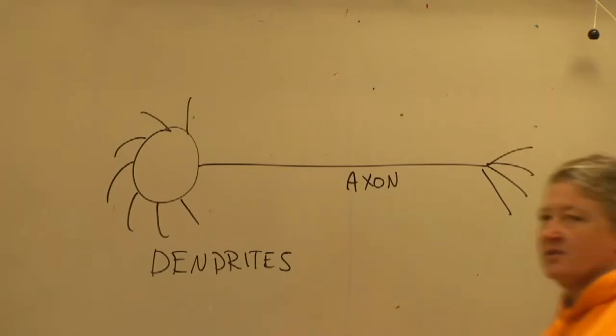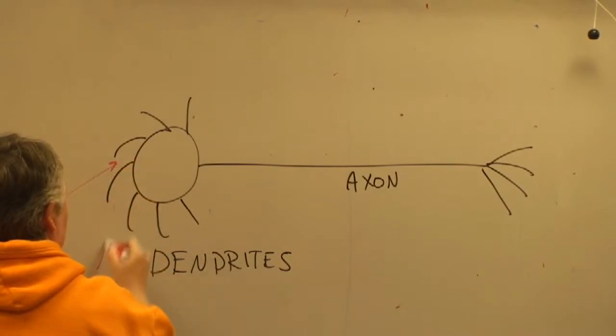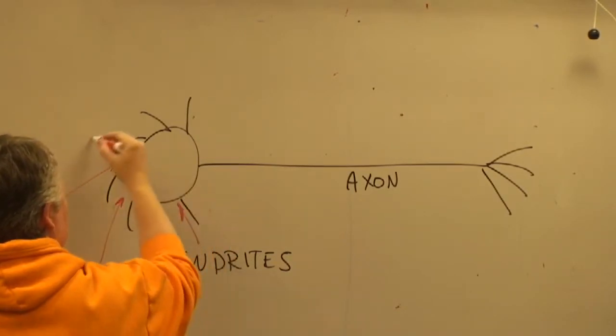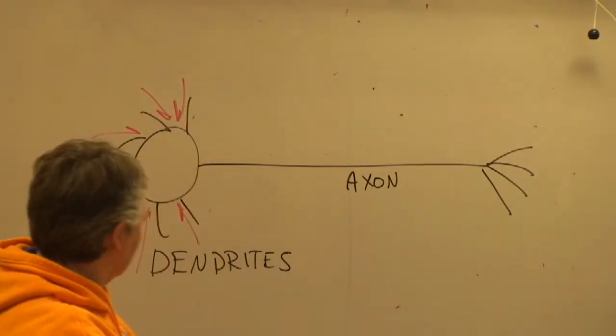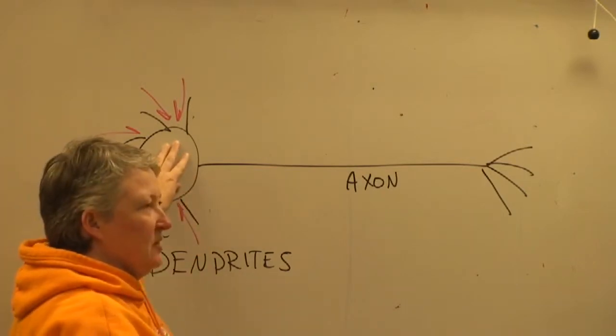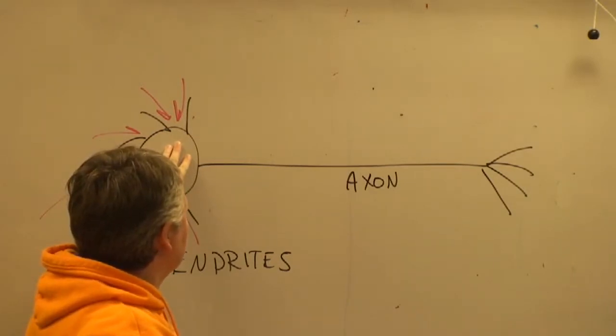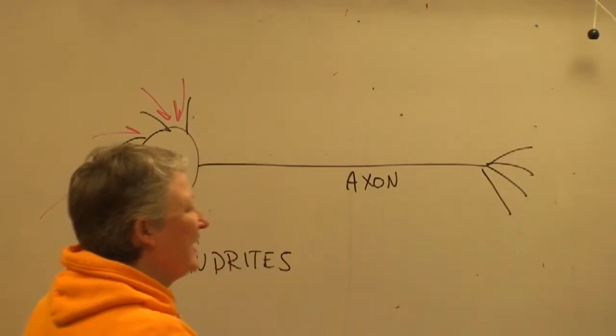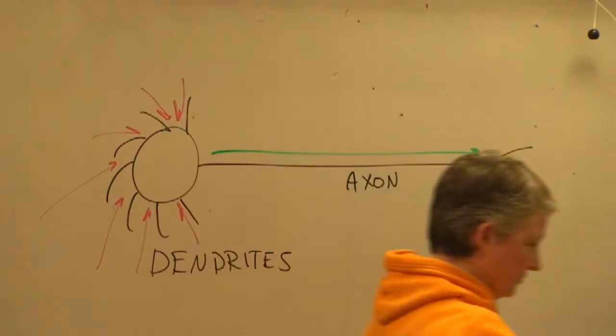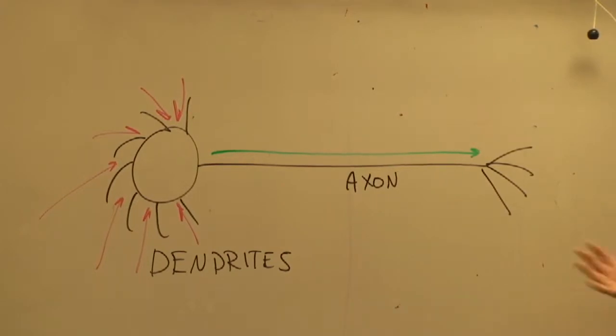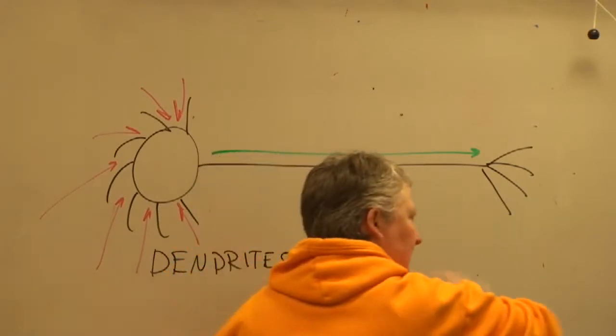So the dendrites are considered to be the input portion. Information travels into the dendrites or the soma. And then if that information is important enough, then that stimulates a signal in the axon. And the axon is considered the output portion. So the dendrites and the soma are like the receiver. And the axon is like the transmitter.